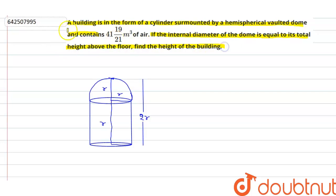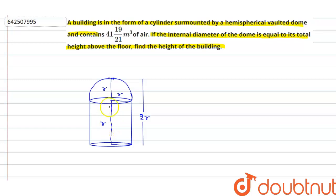So let's suppose the diagram is something like that — the hemispherical dome is above the cylinder. The hemisphere has a radius of r, and the cylinder below also has a radius of r and height of r.